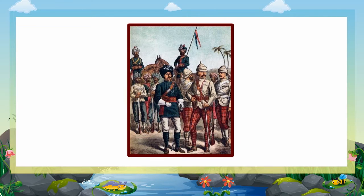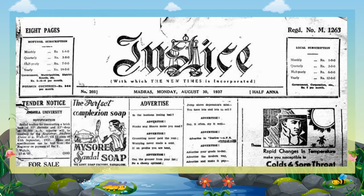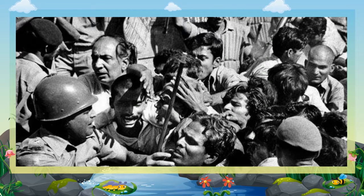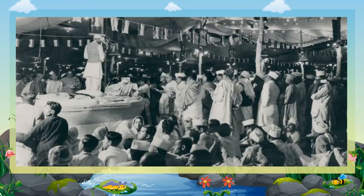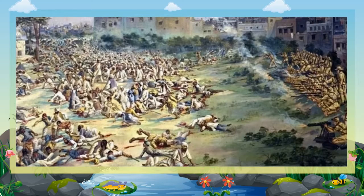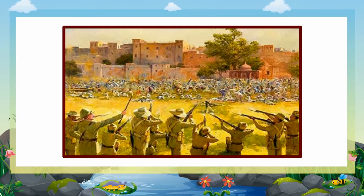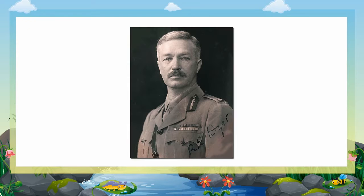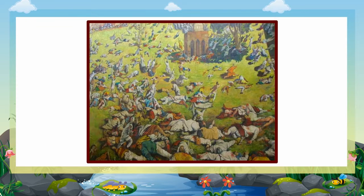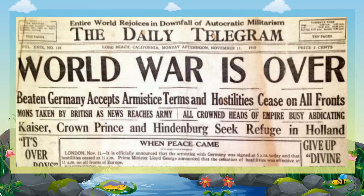The British passed several acts that were harsh and infringed on the basic rights of the people. Among them was the Rowlatt Act of 1919, according to which any person could be arrested without a trial. Hartals and meetings were held all over the country. One such meeting was held at Jallianwala Bagh in Amritsar. The meeting was attended by thousands of men, women, and children. The British under General Dyer blocked the only exit and opened fire. The unarmed people had no means of escaping. Thousands of people were killed, and people were shocked at the brutality of the British.